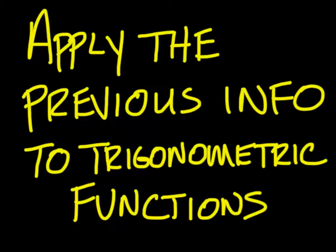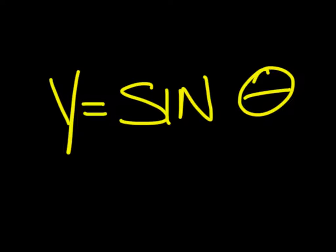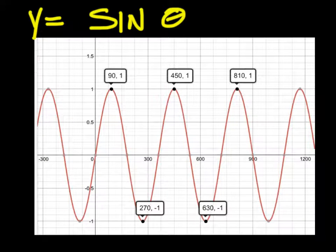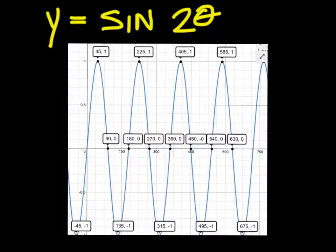Apply that information to trigonometric functions. Here is sine theta, which we've already graphed before. The first maximum occurs at 90 degrees, and then it comes back down and the first minimum occurs at 270 degrees. Now look at sine of 2 theta. The first maximum now occurs at 45 degrees, and the first minimum at 135 degrees.